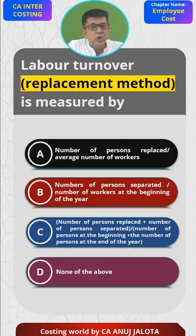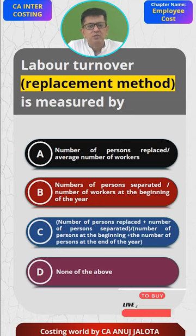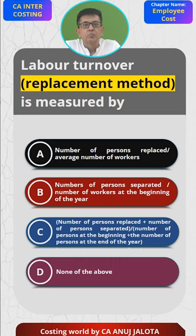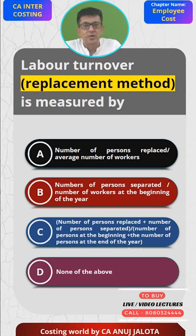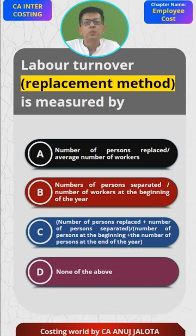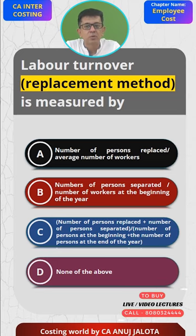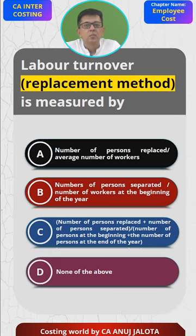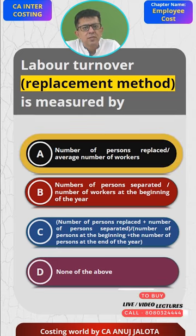Option D is none of the above. Out of the four options, the question is asking about labor turnover under the replacement method, so Option A should be the correct answer — that is, number of workers replaced divided by average number of workers. So A is the correct answer.